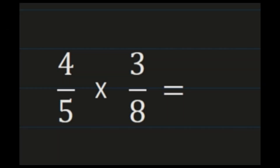For our next example, we have 4 fifths times 3 eighths. We said for the remaining examples that we were going to simplify as we go. So we are going to do some cross simplifying in the rest of these problems — simplifying before you multiply instead of at the end.